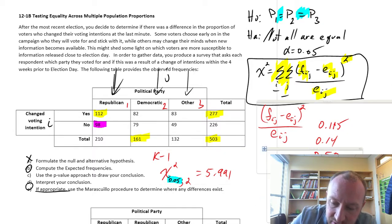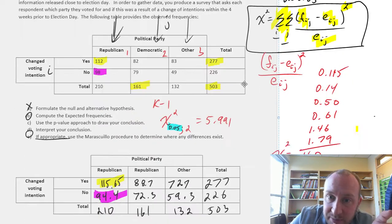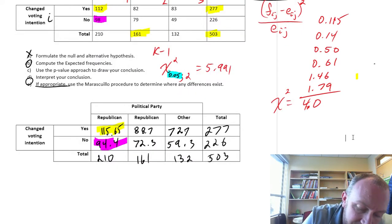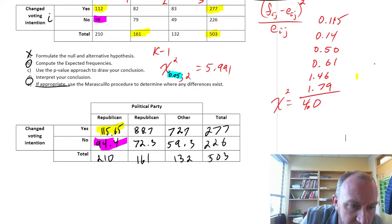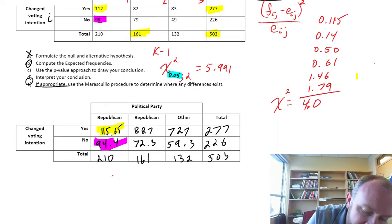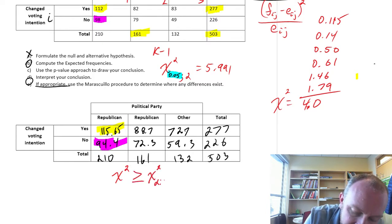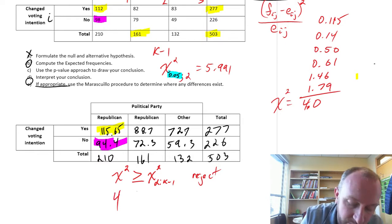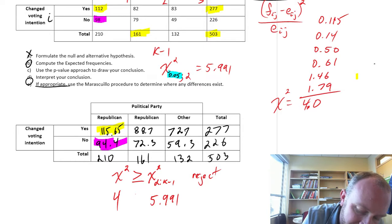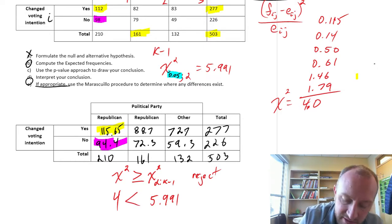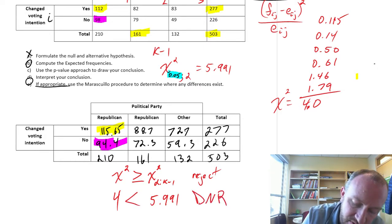So we have our critical value is 5.99. Our rejection rule, just like any other upper-tailed test, is that we will reject if our test statistic, so if our chi-squared, is greater than or equal to that critical value, then we will reject. In our case, our test statistic is 4. Our critical value is 5.991. Our test statistic is less than the critical value, so therefore we do not reject.